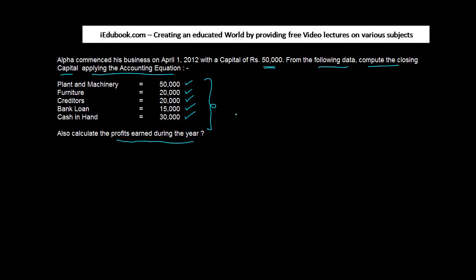So let us see. You are told you have to apply the accounting equation. So shall we first write down the accounting equation. The accounting equation says that assets is equal to liabilities plus capital.